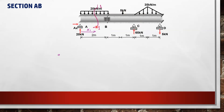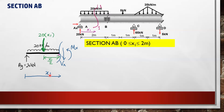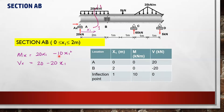Considering cut section 1-1, which passes through section AB with range x1 between 0 and 2 m, we draw the free body diagram with the length from A to the cut section measured as x1. We determine the resultant of the UDL as the area of the rectangle, which is 20x1. We then derive the moment equation by taking moments about O and the shear force equation using summation Fy = 0. Substituting x1 = 0 gives the moment and shear at A as 0 and 20 respectively.